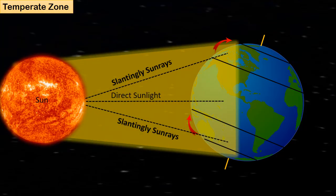The rays of the Sun reach the ground slantingly. The Sun is never directly overhead and the climate is mild, generally ranging from warm to cool. The four annual seasons — Spring, Summer, Autumn and Winter — occur in these areas.